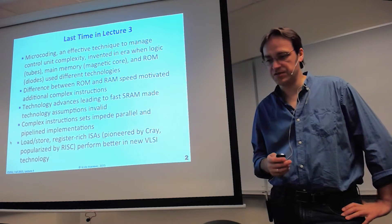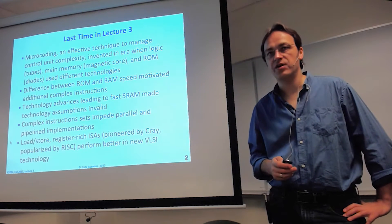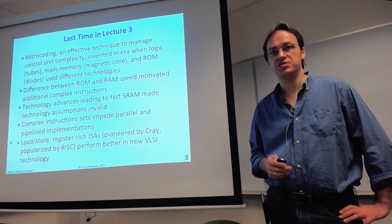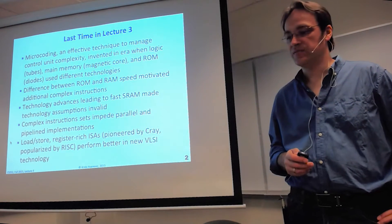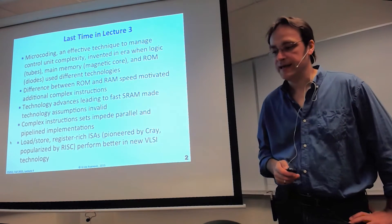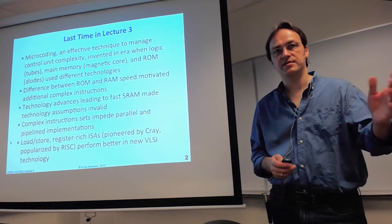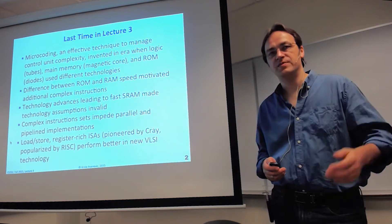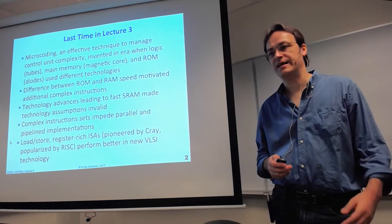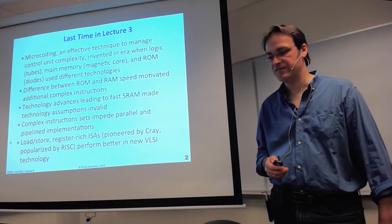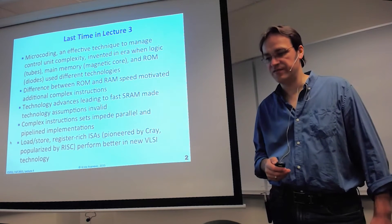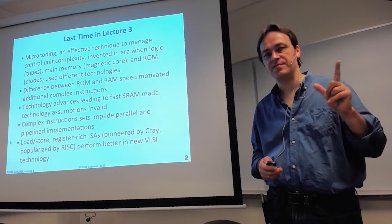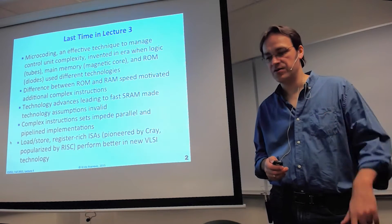Just a quick recap. Last time, lecture three, we talked about microcoding. This was a really effective way of managing control unit complexity — that was the original design goal of microprogramming. It was invented in an era with different technologies: logic tubes for logic, core for main memory, and ROM for various inexpensive and fast technology. There was a big difference between ROM and RAM speed, which really motivated using microcode.